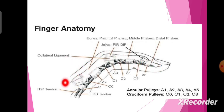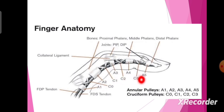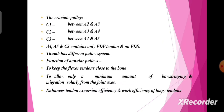The finger also has five annular pulleys, A1 to A5, and cruciate pulleys C0 to C3. The three cruciate pulleys are C1, C2, and C3. C1 is present between A2 and A3, C2 between A3 and A4, and C3 between A4 and A5. A4, A5, and C3 contain only the FDP tendon and no FDS. The thumb has a different pulley system.